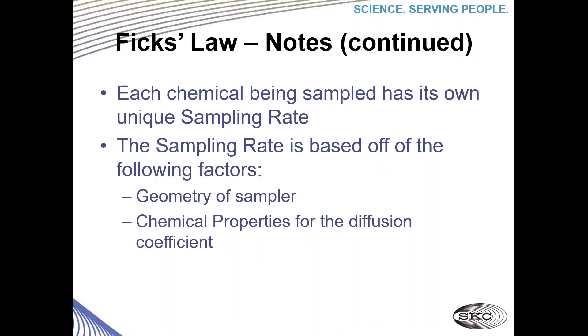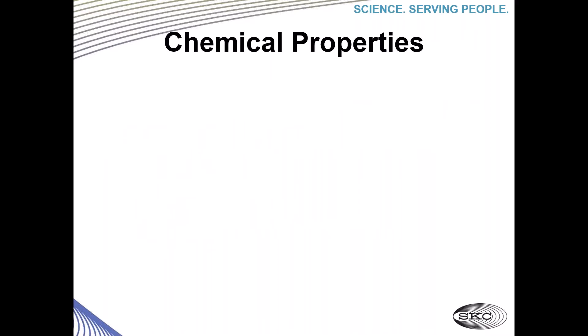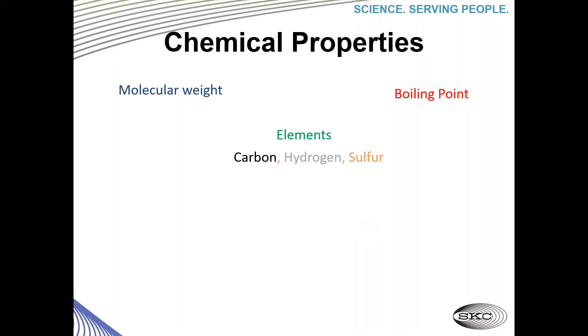Some notes on Fick's law: each chemical being sampled has its own unique sampling rate. The sampling rate is based on the geometry of the sampler and the chemical properties for the diffusion coefficient. Chemical properties involved include molecular weight, boiling point, and elements present — such as carbon, hydrogen, sulfur, fluorine, bromine, or chlorine. Ring structure also matters: whether it's a three, four, five, or six-member ring, and whether it's aromatic, plus other properties such as whether it is an aldehyde or a ketone, or contains a double-bonded oxygen in the chemical formula.